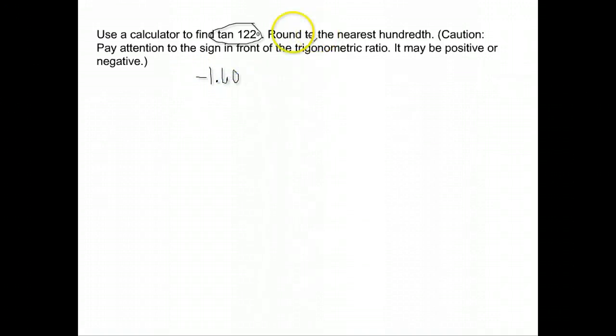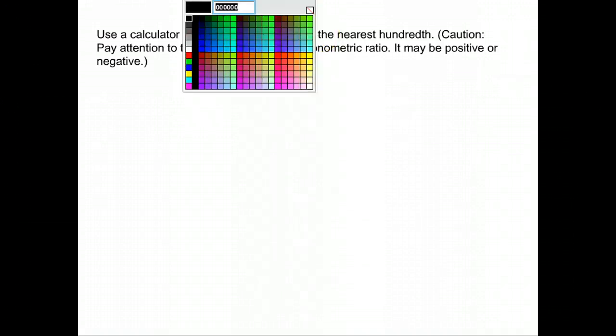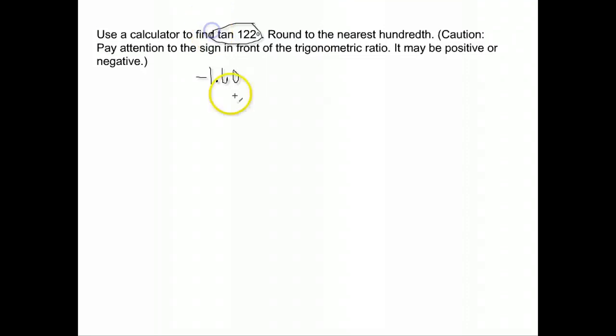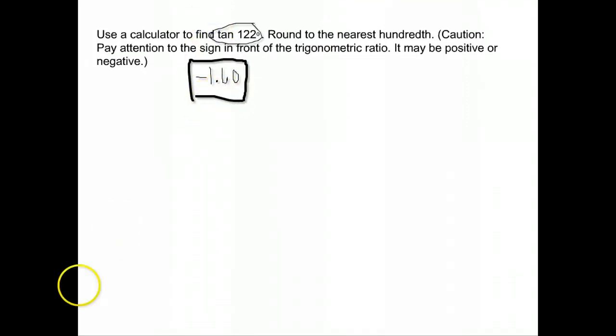It wanted it rounded to the nearest hundredth. The hundredth is two decimal places, so that's where we would have it: negative 1.60.